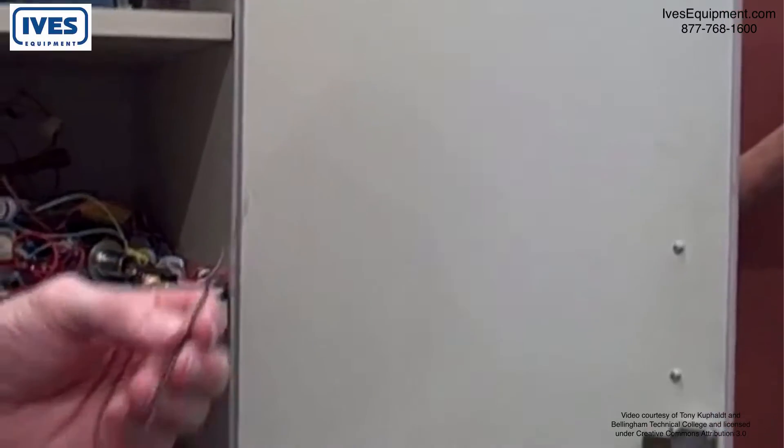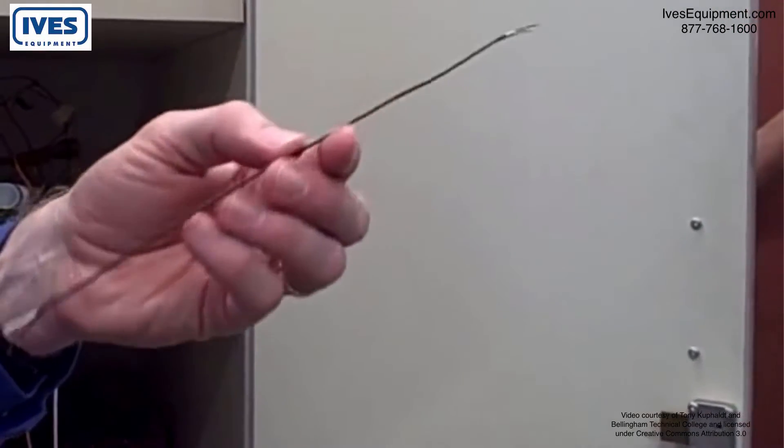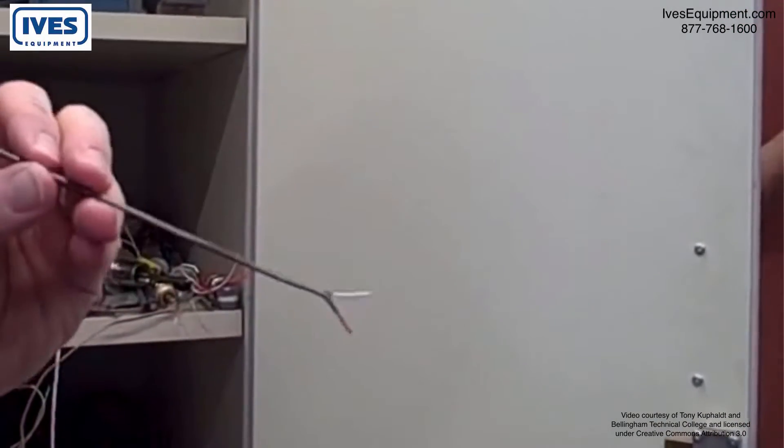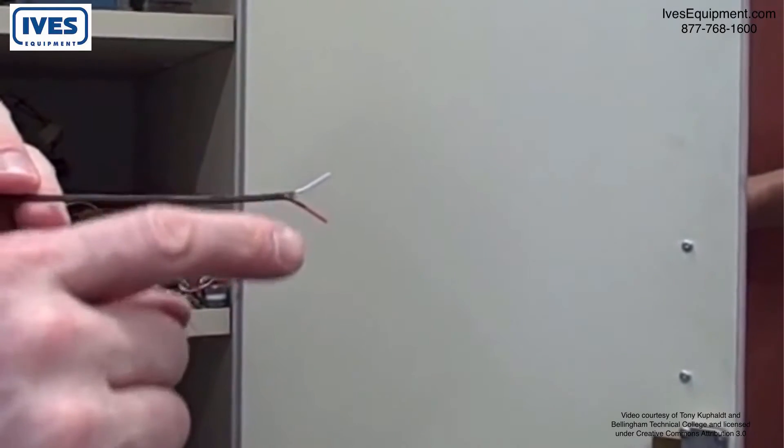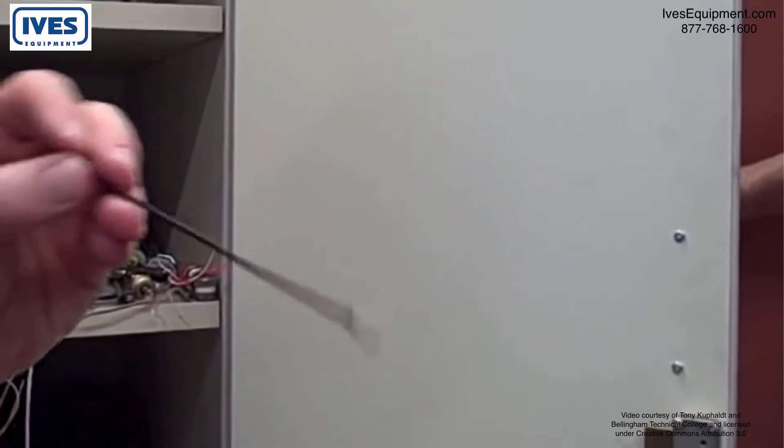Okay, what we're looking at here is a piece of thermocouple wire. This right here is type J. We can tell that from the color code, white and red, with red being negative and white being positive.